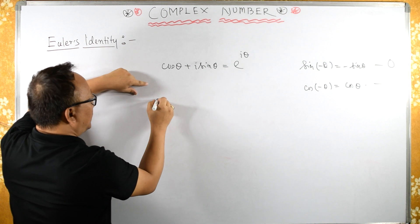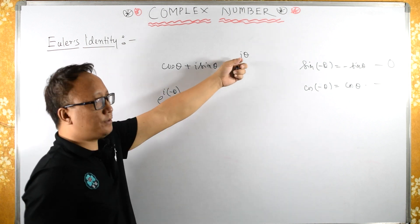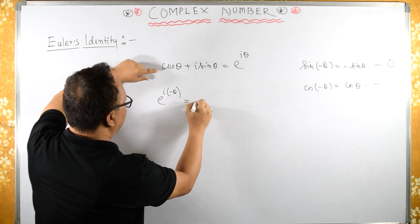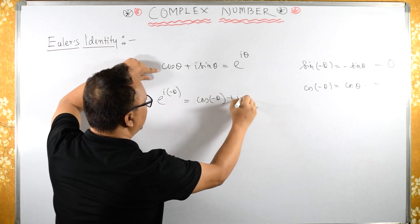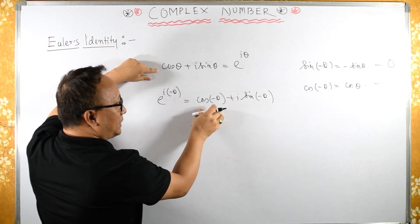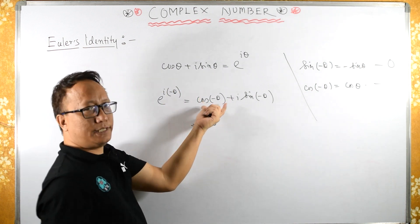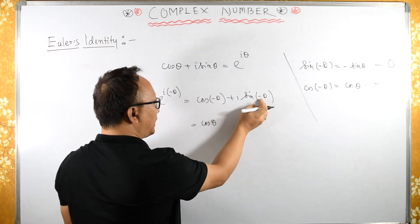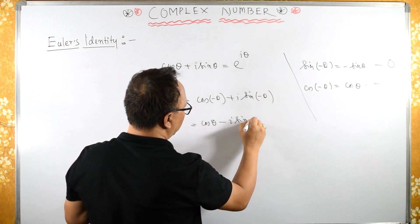Now if I substitute e raised to i of minus theta, instead of theta if I substitute minus theta, then what will I get? I will get cos of minus theta plus i sin of minus theta. So cos of minus theta is cos theta because it is an even function, and sin of minus theta, minus will come outside, so minus i sin theta.